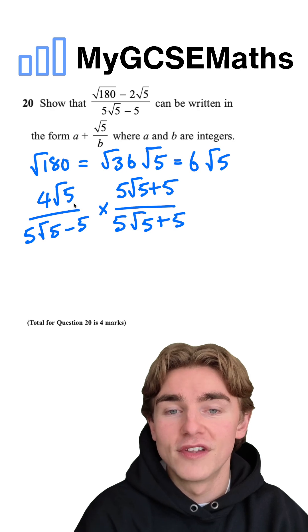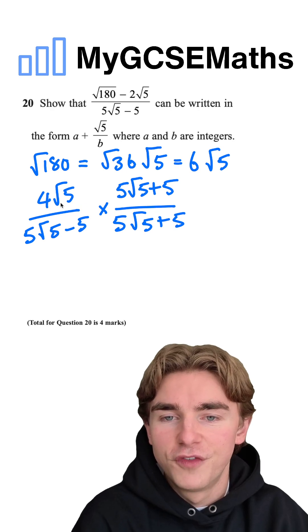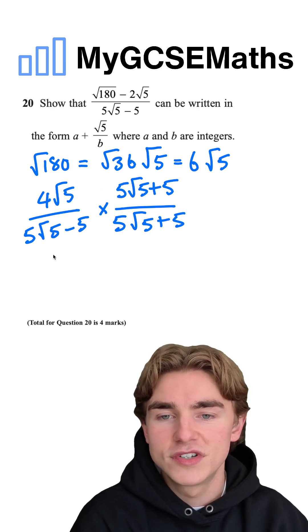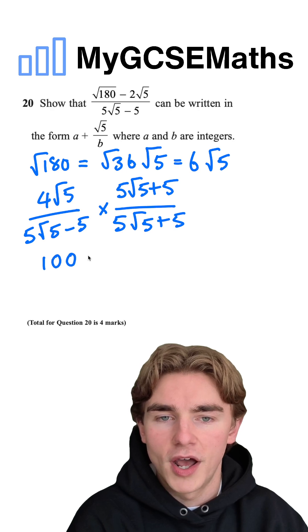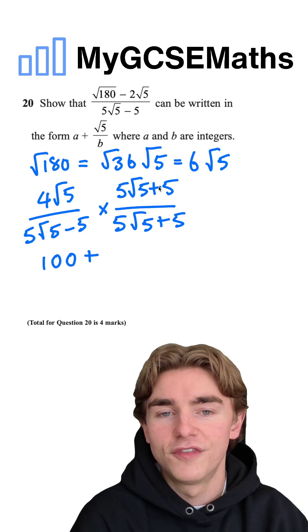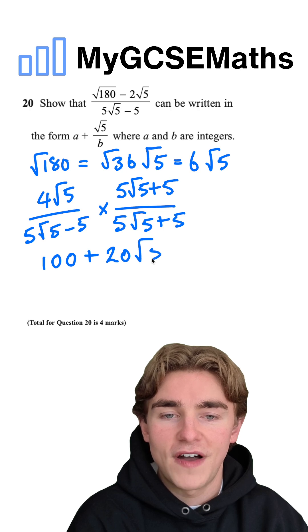Next step, simplifying, I'm going to do this pretty quickly. Let's have a look. We're going to have 4 root 5 times by 5 root 5 on the top. That's going to be 20 times by 5, which is going to be 100. So we're going to have 100 plus, and then we're going to have 4 root 5 times by 5. We're going to do the 4 times of 5. We're going to have 20 root 5.